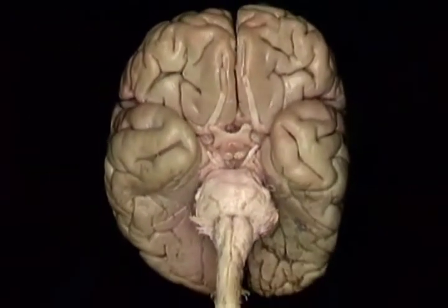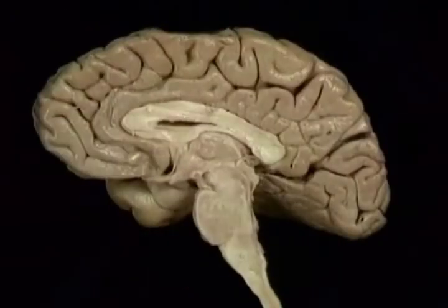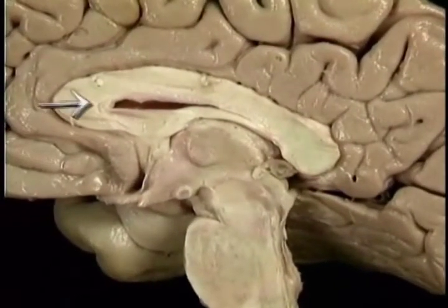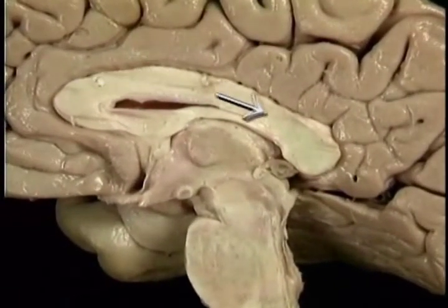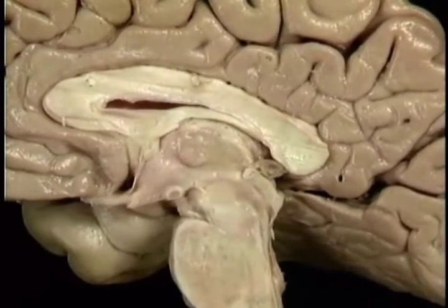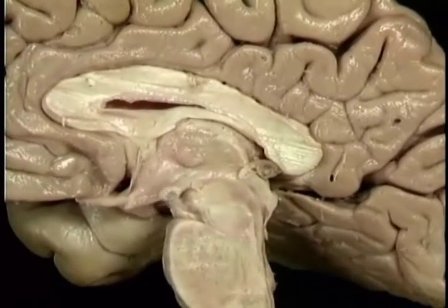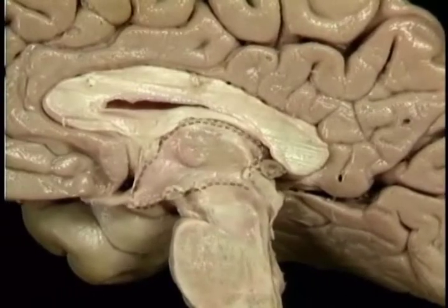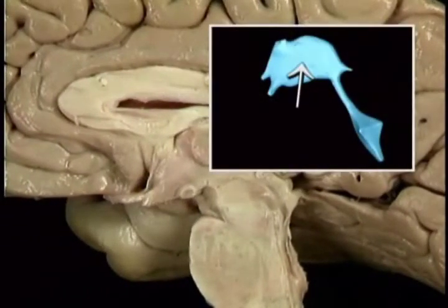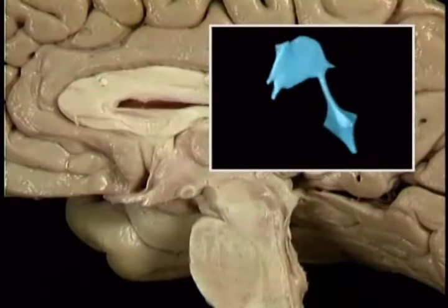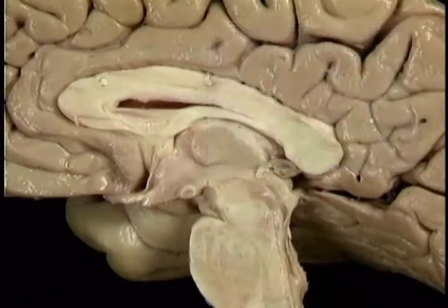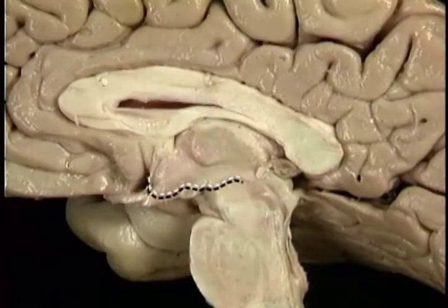To see these connecting structures better, we'll look at a brain that's been divided in the midline. Here's the corpus callosum. This is the cerebral peduncle. The third ventricle is here — quite narrow from side to side. This is the floor of the third ventricle.